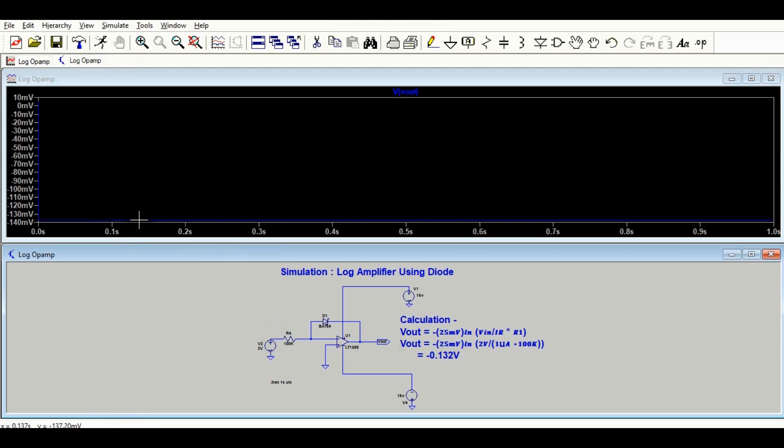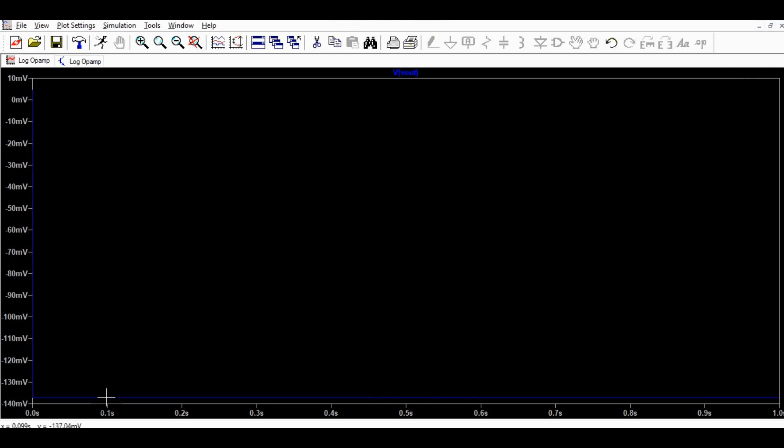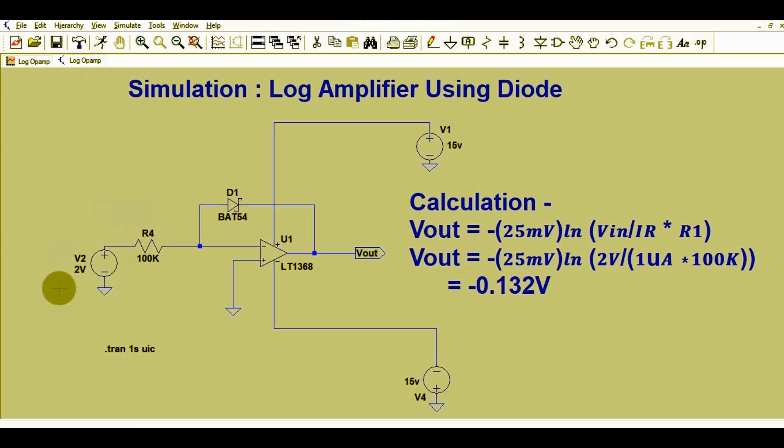You can see your output voltage is minus 137.20 millivolts. What was your calculated value? Your calculated value was minus 132 millivolts. Now you are getting minus 137.20 millivolts. So you can see your input voltage is 2 volts and your output voltage is 137 millivolts.